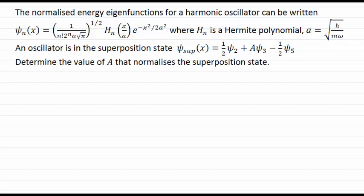Now that you've read through the question, you should see that you've been given a superposition state, that is a linear combination here of energy eigenstates of a harmonic oscillator, and you're being asked to calculate a particular value, capital A here, that will normalize that superposition state.